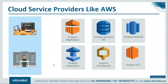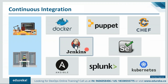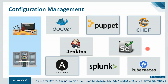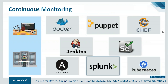DevOps engineers should have good hands-on knowledge of automation testing tools like Selenium. Knowledge of continuous integration tools like Jenkins is also very important. They should have expertise with automated delivery tools like Puppet, Chef, and Ansible. With companies adopting microservice architecture and optimized resource utilization, knowledge of containerization platforms like Docker is critical, along with container orchestration tools like Kubernetes. Docker is an open platform for developers and system admins to build, ship, and run distributed applications — whether on laptops, data center VMs, or the cloud. They should also have experience with logging and monitoring tools like Splunk and Nagios.